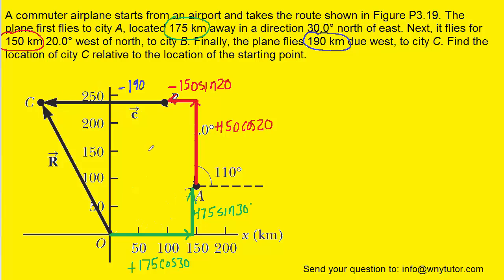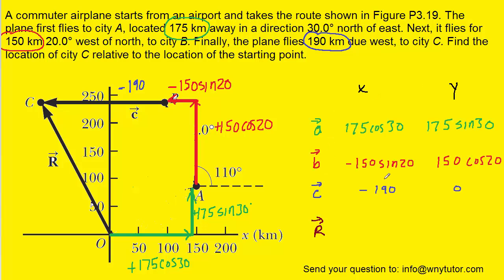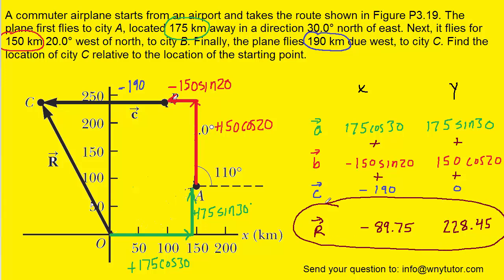We have successfully broken all vectors into their components. We can now organize the information into a table, with the three vectors along the left side and the X and Y components at the top. All we need to do is fill in the components found thus far. Our next step is to add all the X components together to get the overall X component of the resultant, and add all the Y components together to get the overall Y component of the resultant.